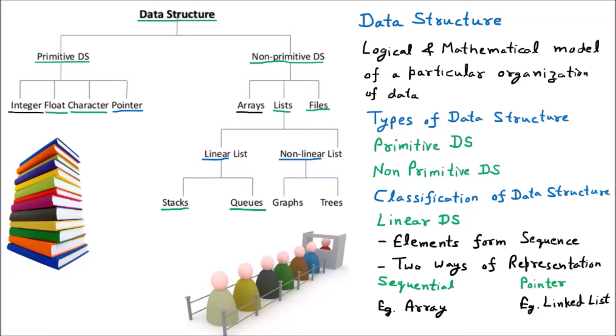We are discussing the difference between stack and queue. The stack is LIFO — last in first out. The queue is FIFO — first in first out. Both stack and queue are part of the linear data structure, meaning elements are arranged in a line.